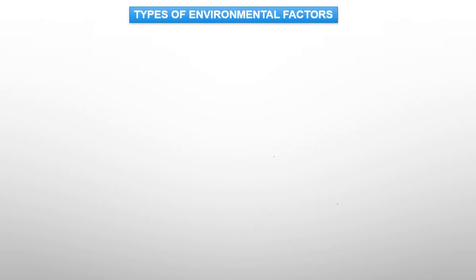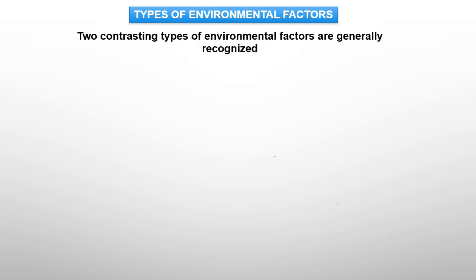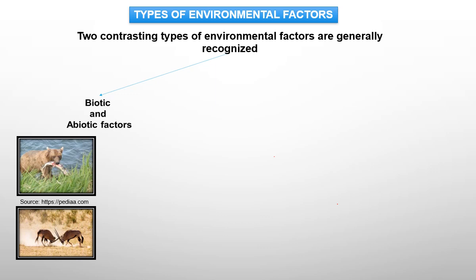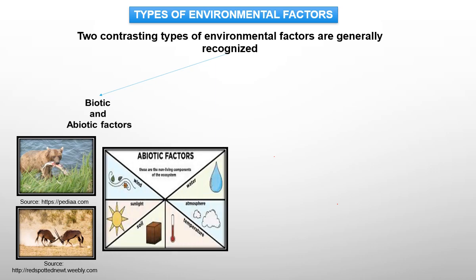Types of environmental factors: two contrasting types are generally recognized — biotic and abiotic factors. Biotic variables include all living organisms in an ecosystem, while abiotic factors are non-living components of an ecosystem. Biotic factors are the aggregate of influences exerted on organisms by the life processes of other organisms, and include interactions between organisms.